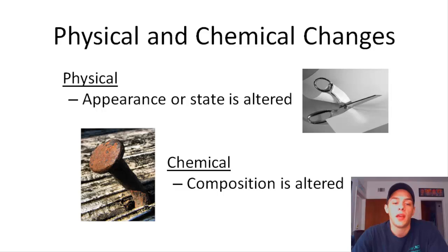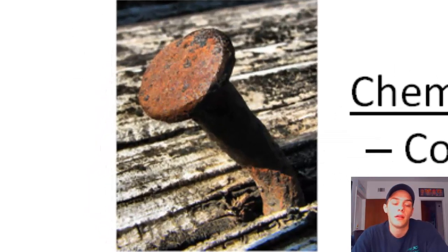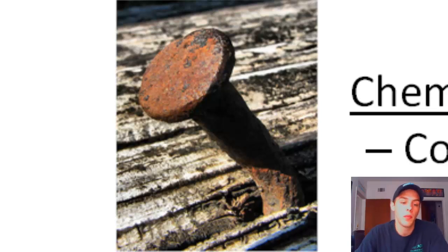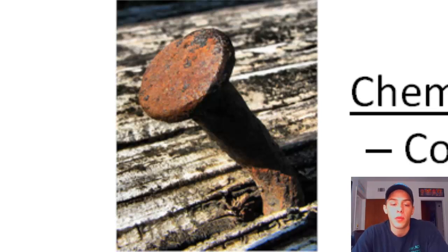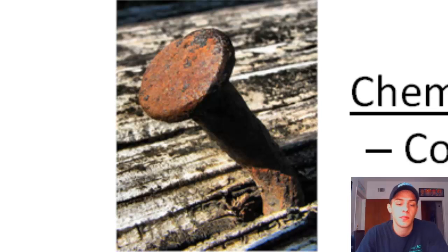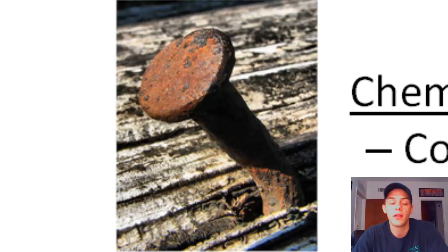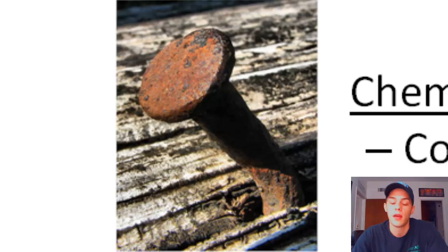In this picture we see a rusty nail. The process of rusting is a chemical change. Let's say the nail is made of iron. During rusting, the iron combines with oxygen in the air to form a new substance called iron oxide. It's no longer iron and it's no longer oxygen — it is now a new substance, iron oxide. Therefore, it's considered to be a chemical change.